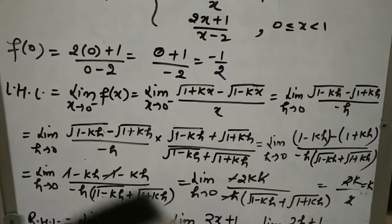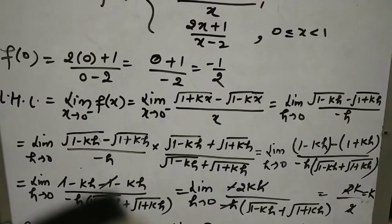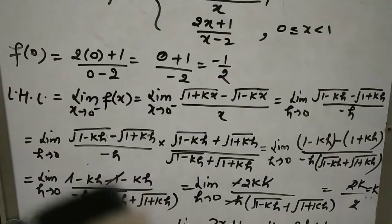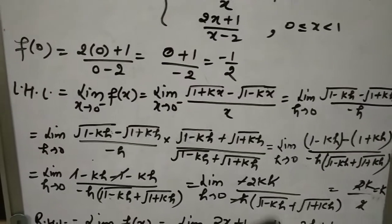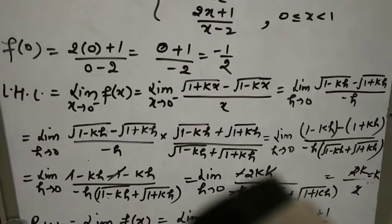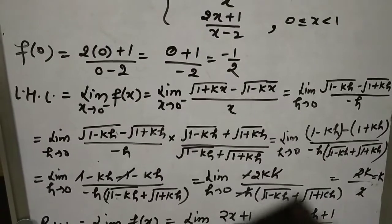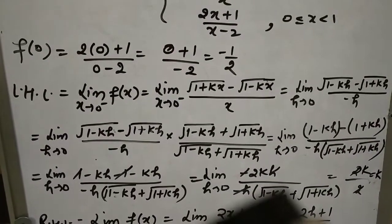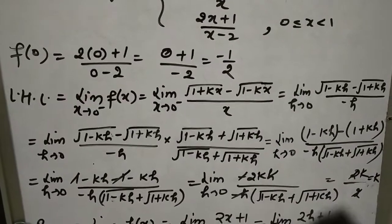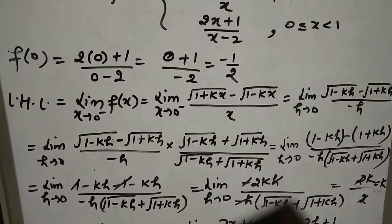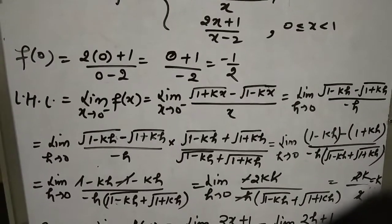ऊपर minus sign था तो अंदर के सारे signs change: minus 1 + kh minus 1 minus kh = -2kh। h से h cancel, minus से minus: बचा 2k/(√(1-kh) + √(1+kh))। h = 0 put करने पर: 2k/(1+1) = 2k/2 = k। So left hand limit = k।